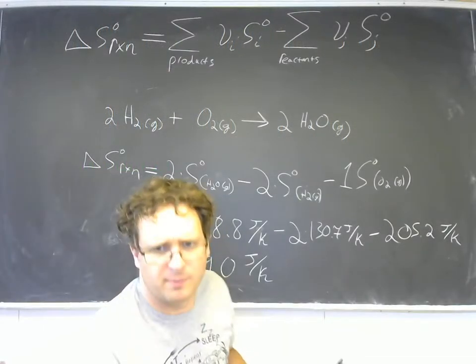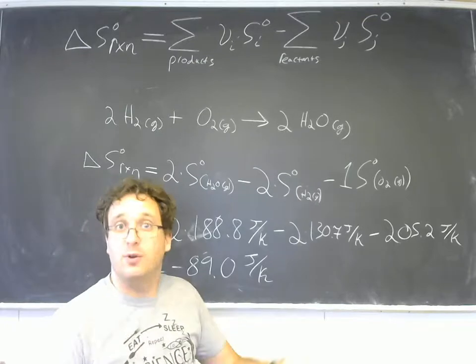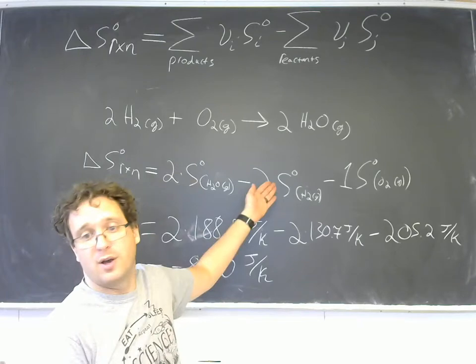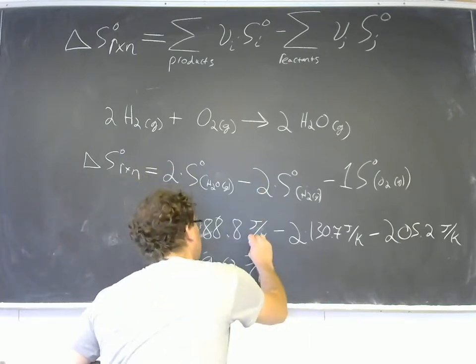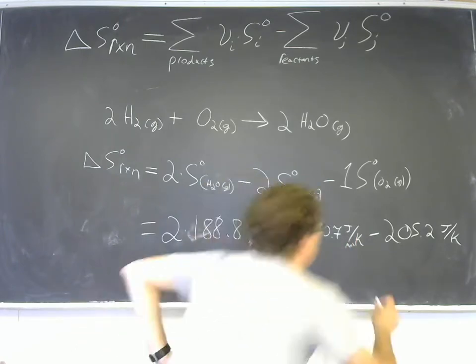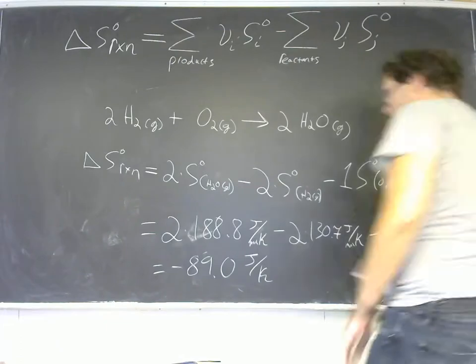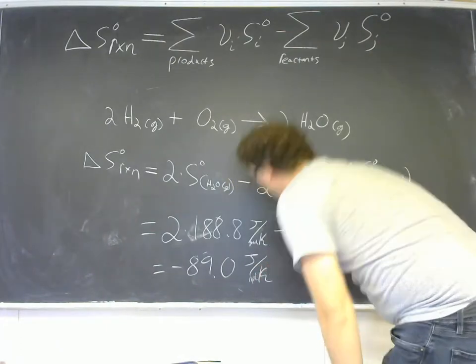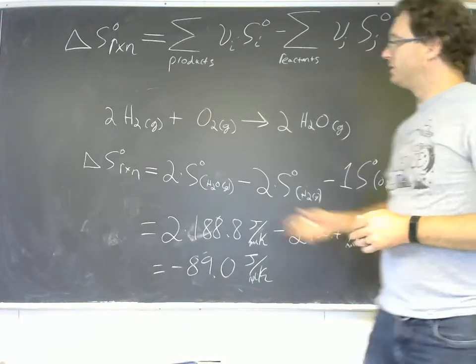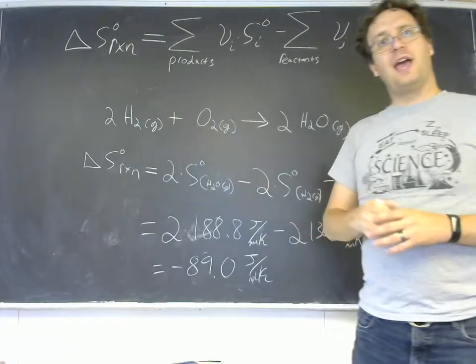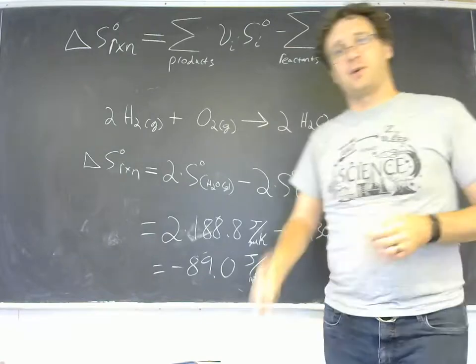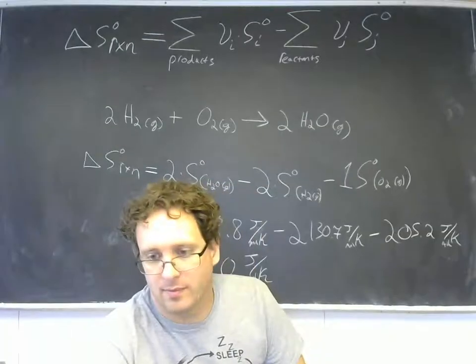I'm going to make one quick correction. My table not having the units threw me off and I made a small mistake. These are standard molar entropy, so these should all be joules per mole kelvin. So negative 89 joules per mole kelvin is the standard change in entropy for the reaction of hydrogen and oxygen to produce water vapor.